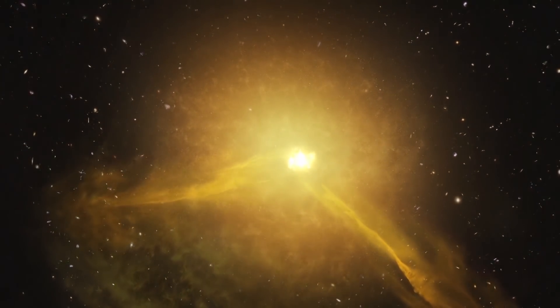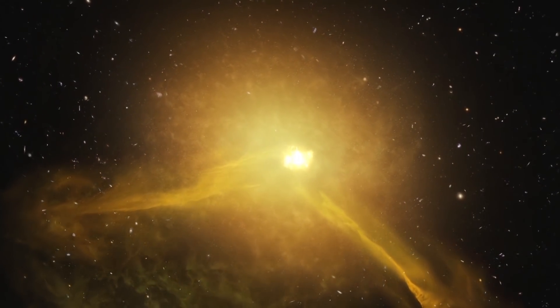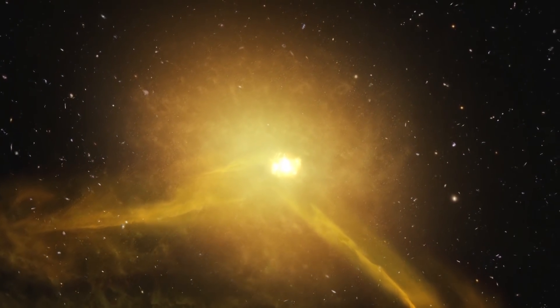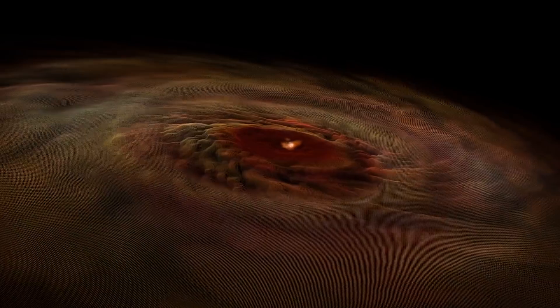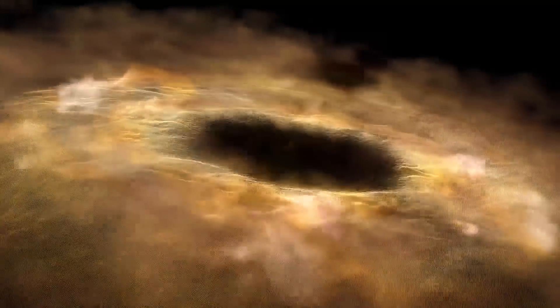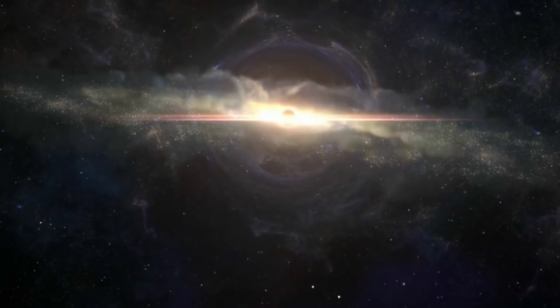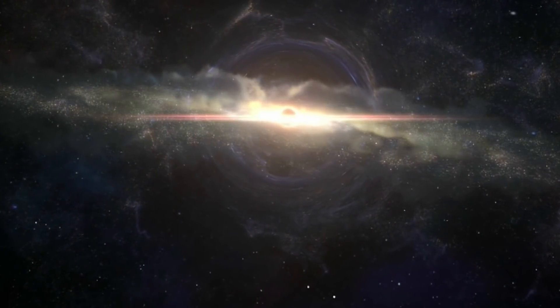Most black holes form when a star which is ten times more massive than our sun runs out of fuel for fusion. This causes the star to collapse, explode as a supernova, and, if enough material is left over after the explosion, becomes what is called a stellar black hole.